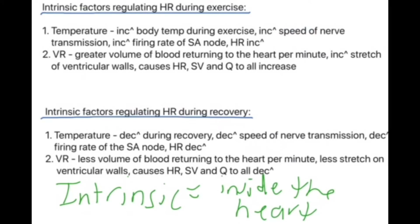Before going into the extrinsic factors, let's look at the intrinsic factors regulating heart rate during recovery — it's basically the opposite. As you recover, your body temperature decreases, which decreases the speed of nerve transmission, decreasing the firing rate of the SA node and consequently decreasing heart rate. With venous return, there is now less volume of blood returning to the heart per minute, meaning less stretch on the ventricular walls, causing heart rate, stroke volume, and cardiac output to all decrease.